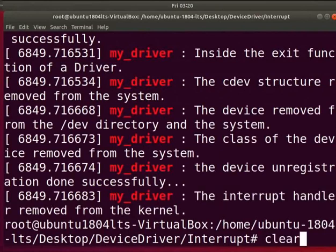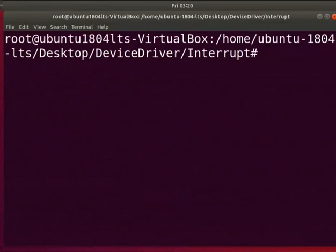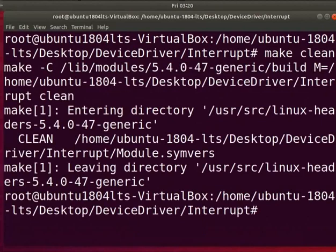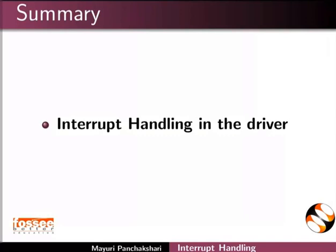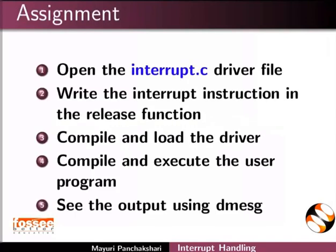Clear the screen. To remove the object files, type make clean. With this we come to the end of this tutorial. Let us summarize. In this tutorial we learnt interrupt handling in the driver. As an assignment, open the interrupt.c driver file and write the interrupt instruction in the release function. Compile and load the driver, then compile and execute the user program. See the output using the dmesg command.